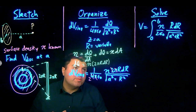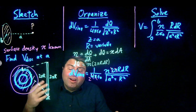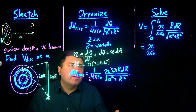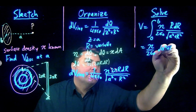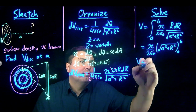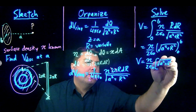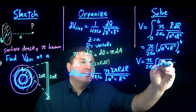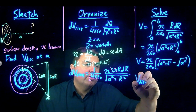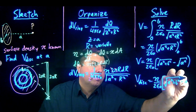To solve this, we can use a u-substitution where u equals a squared plus r squared, so du equals 2r dr. Or we can use Wolfram Alpha. Either way, we get eta over 2ε₀ times the square root of a squared plus r squared evaluated from 0 to b. So V equals eta over 2ε₀ times the quantity: square root of a squared plus b squared, minus the square root of a squared, which is just a. So the electric potential of the disk is eta over 2ε₀ times (√(a² + b²) − a).